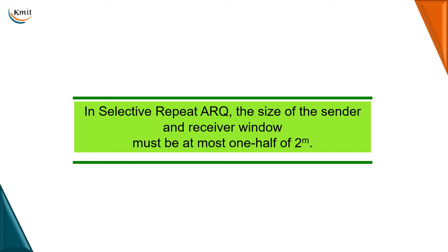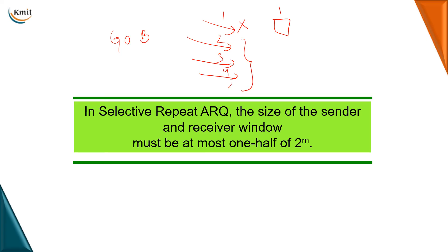Now moving on to Selective Repeat ARQ. The problem with Go-Back-N ARQ is that if frame 1 is lost and you have already sent frames 2, 3, 4, the receiver won't accept those frames and you must go back and resend everything from frame 1. The main disadvantage is high bandwidth loss due to these unnecessary retransmissions.